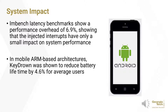The authors used a tool called LMBench for a performance analysis of Unix-based systems, which is a benchmark suite intended to simulate a realistic workload on multi-core systems. The results showed a performance overhead of 6.9%, showing that injected interrupts only had a small impact on kernel performance, which would normally sit around about 2.5%. For mobile-based ARM architectures such as the Android operating system, KeyDrown was shown to reduce battery lifetime by 4.6% for the average user, with power consumption elevated at times when the keyboard was shown on the screen.